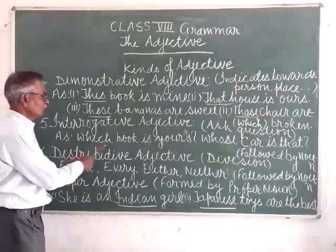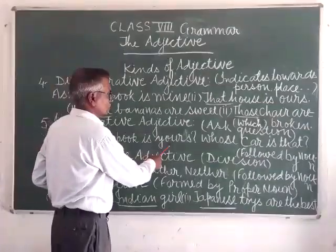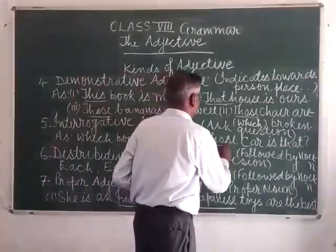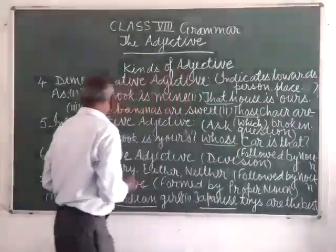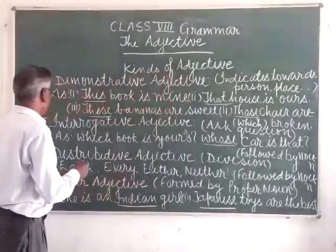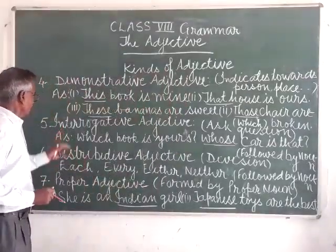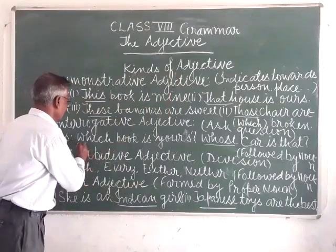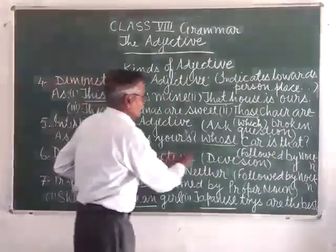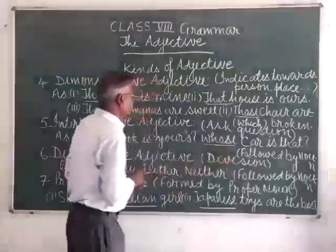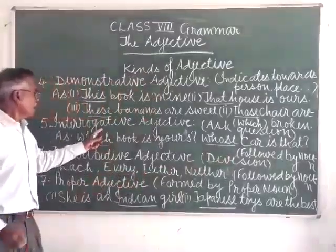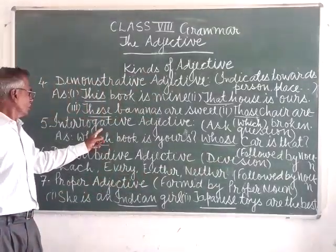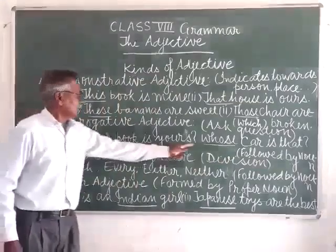For example: 'Which book is ours?' and 'Whose power is that?' In these two examples, the words which and whose are considered as interrogative adjectives. These words must be followed by a noun.